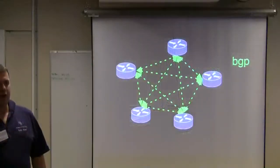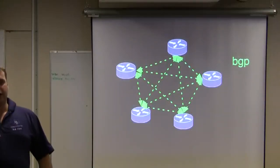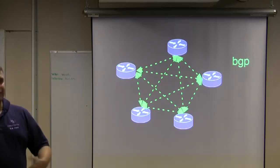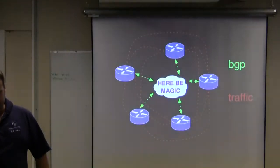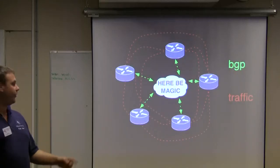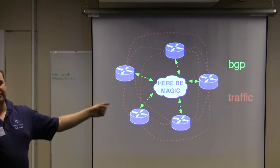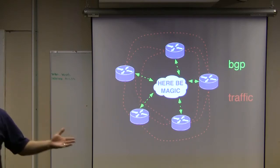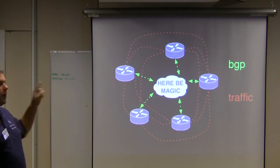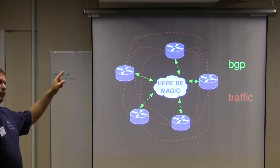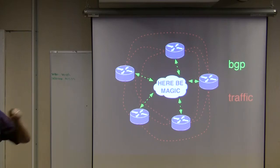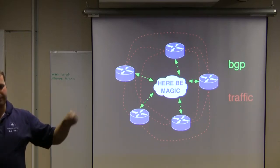The way they work on a normal peering fabric: you configure BGP sessions between routers and the traffic flows in the same direction. But with a route server in the middle, you configure just one BGP session to the route server and you get the prefixes of all the other connected networks, but the traffic still flows router to router. It doesn't actually go through the route server. The traffic is still member to member.